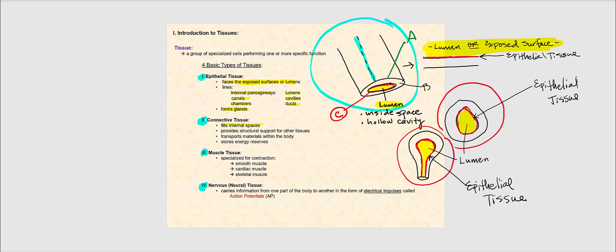The next basic tissue type is connective tissue. Connective tissue fills internal spaces, provides structural support for other tissues, transports materials within the body, and stores energy reserves. It is the most diverse of the four basic tissue types. For example, bone is connective tissue and blood is connective tissue — they look nothing alike, but both are connective tissue.